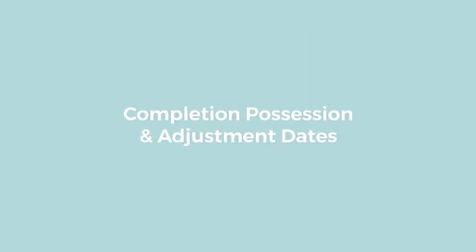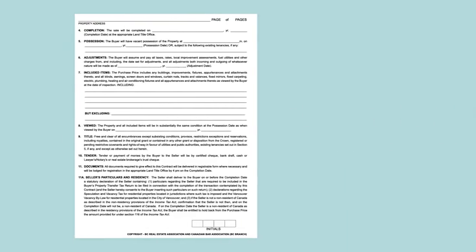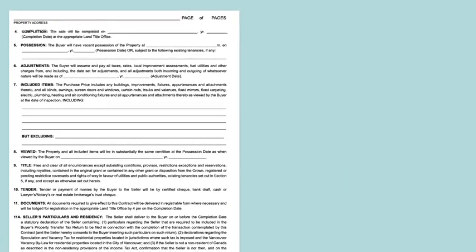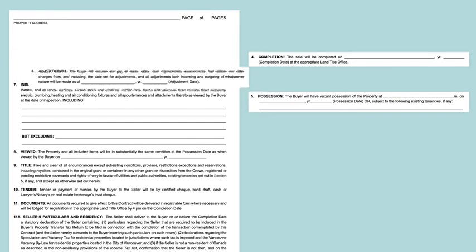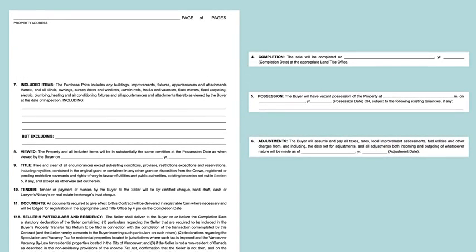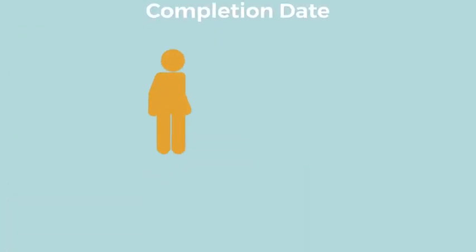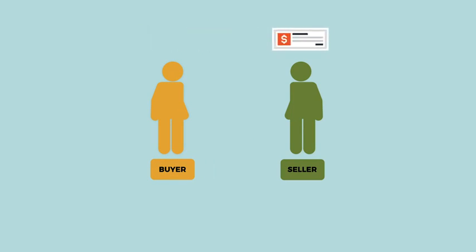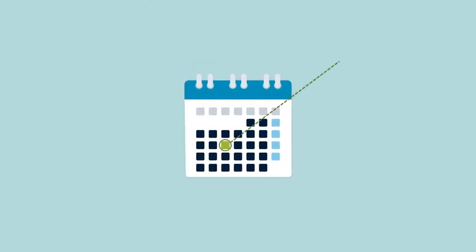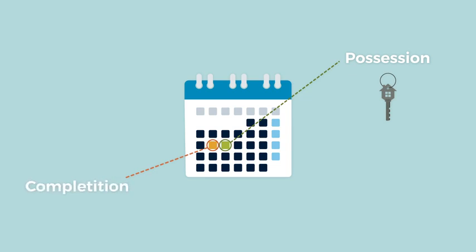Completion, Possession and Adjustment Dates: These sections set out the timeline for the transaction. The completion date is the date when the buyer's money is paid to the seller and ownership of the property transfers to the buyer. The possession date is the date that the buyer is entitled to take possession of the property — in other words, when the buyer gets the keys and is allowed to move in. This date is often the day after completion, but it can be any date agreed to by the buyer and the seller.